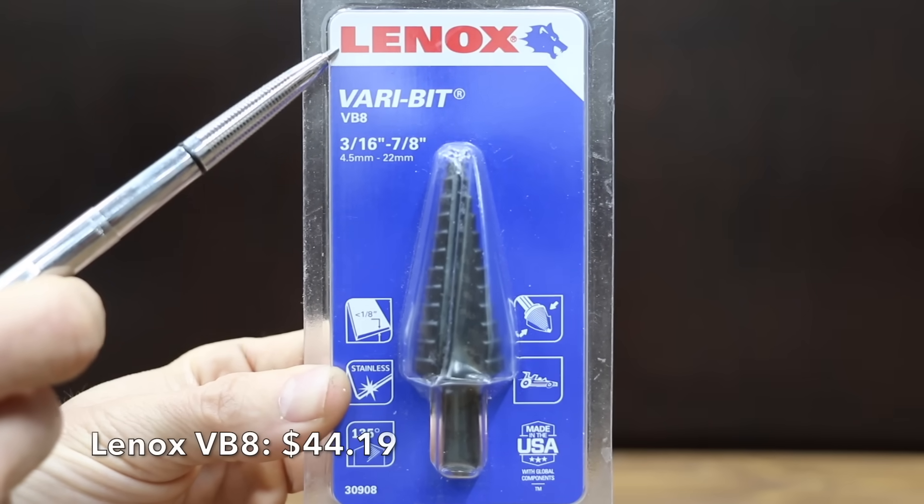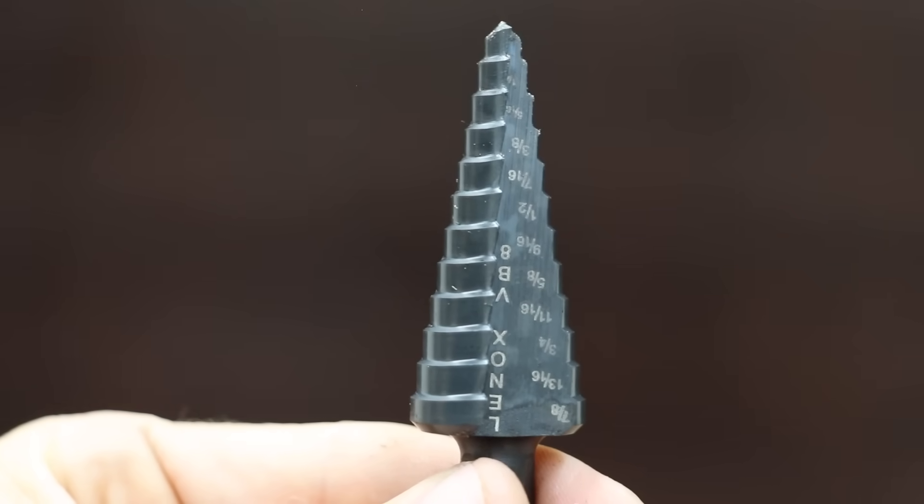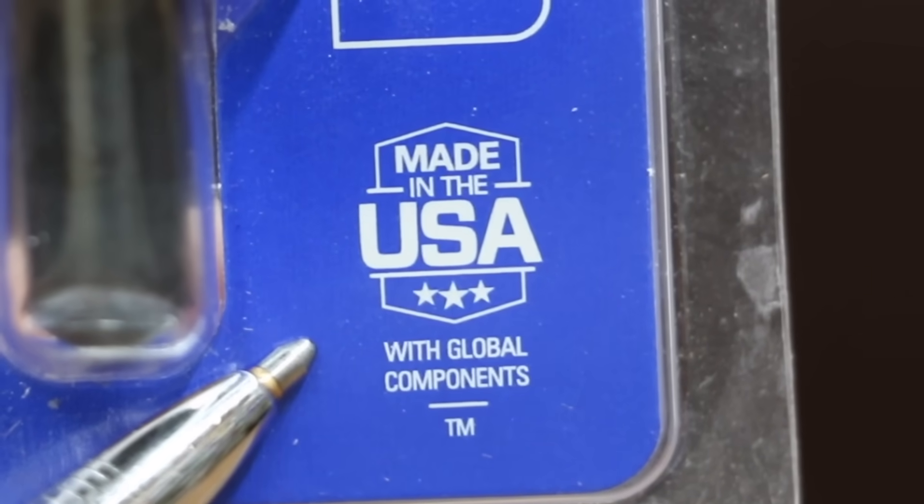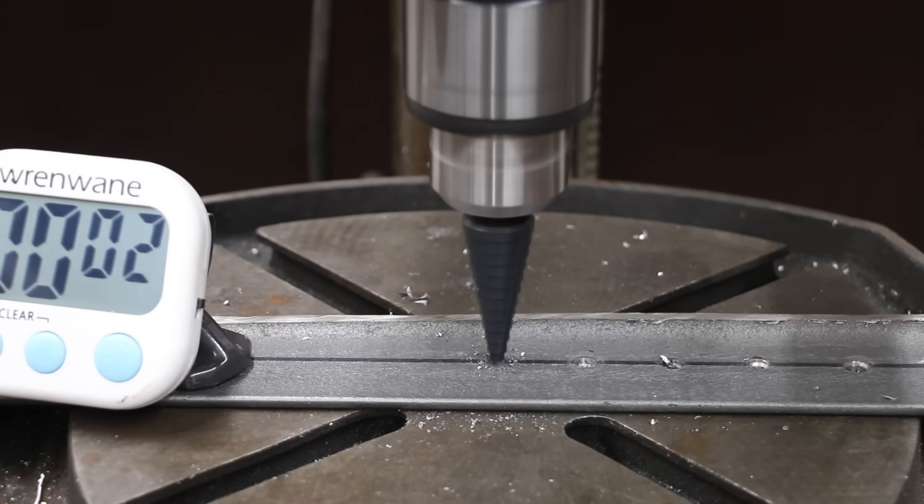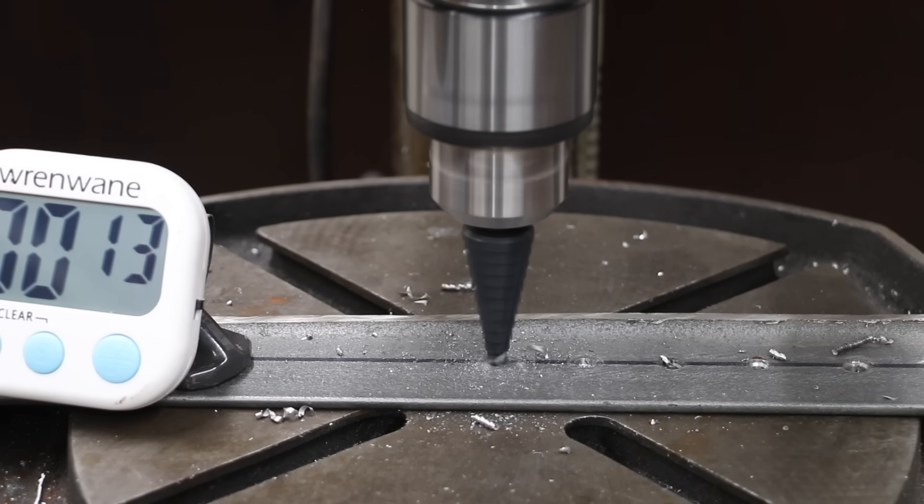At $44.19, the Lennox VB8 is the second most expensive bit we'll be testing. It claims it can handle stainless. Made in USA with global materials. The Lennox made easy work of the mild steel at 14 seconds, but was definitely no match for the DeWalt's eight second time.